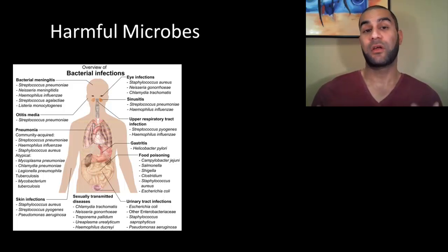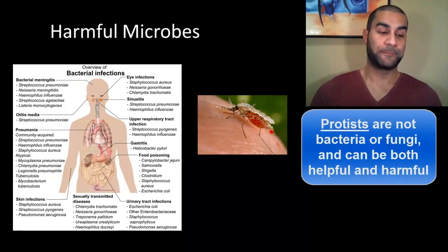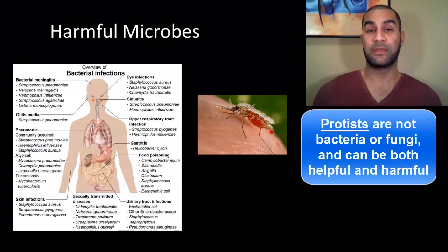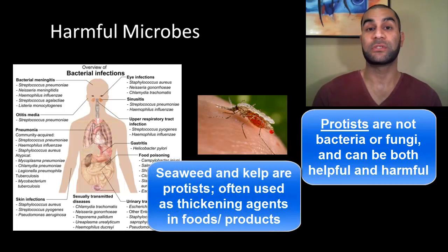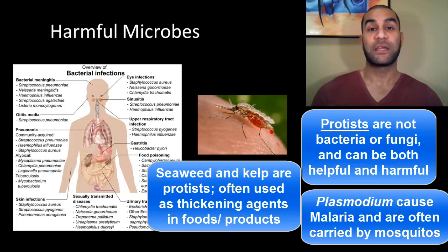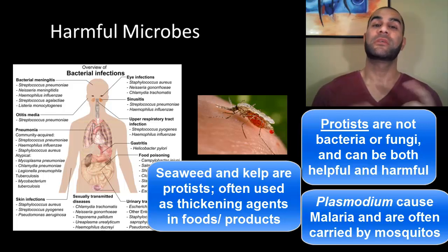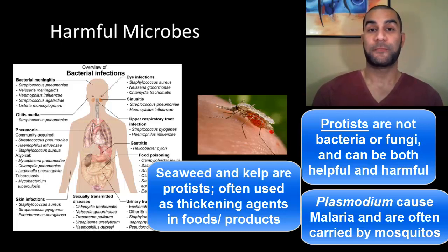Not all pathogens are bacterial. There are other categories of harmful or pathogenic microbes as well. Protists have some major roles in terms of helpful and beneficial use - anything related to seaweed or kelp is from protista, as seaweeds are actually examples of protists. But protists can be disease causing as well. Probably the most common example of a disease-causing protist is what's called the plasmodium protist, which is the carrier of malaria. It's carried typically by mosquitoes - if a mosquito feeds off of somebody with malaria, it takes in that plasmodium protist and passes it into the next person it feeds on.